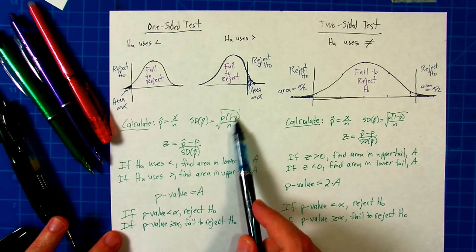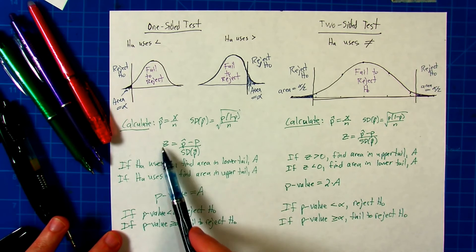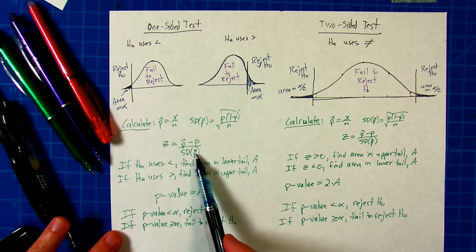Standard deviation of p-hat is p, one minus p over N, all square root. Z is going to be p-hat minus p over the standard deviation of p-hat.